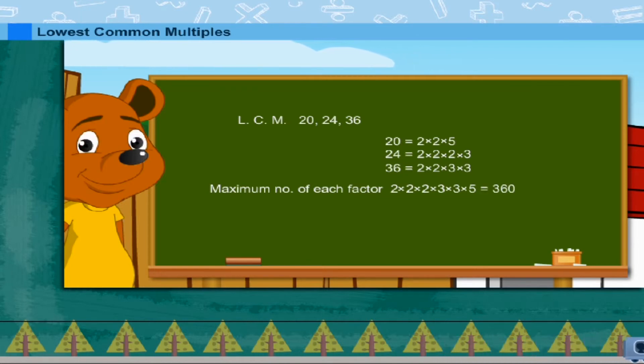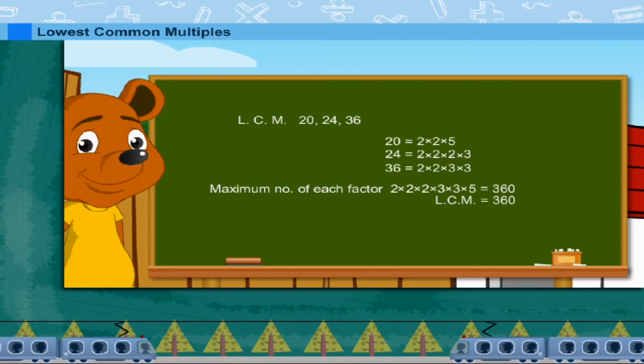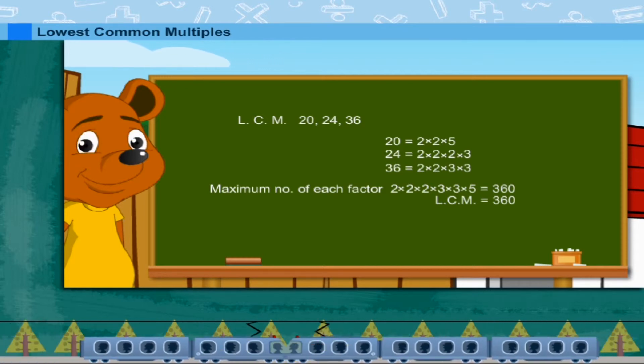He now selects the maximum number of each factor: 2 × 2 × 2 × 3 × 3 × 5 = 360. So the lowest common multiple is 360.